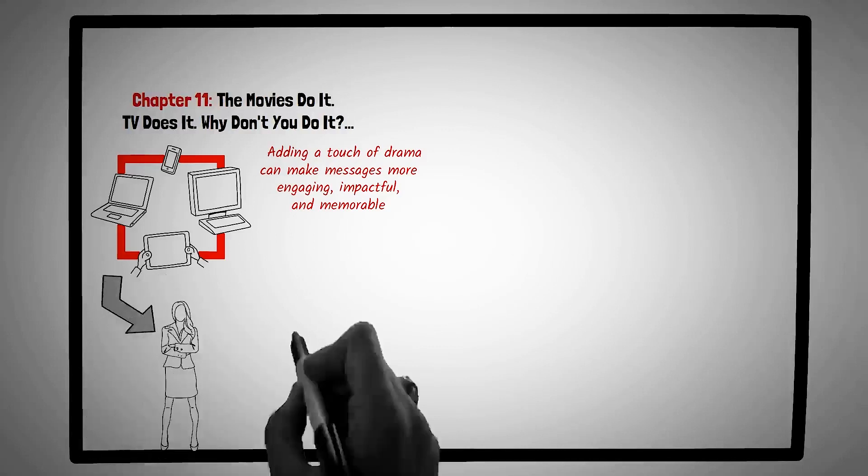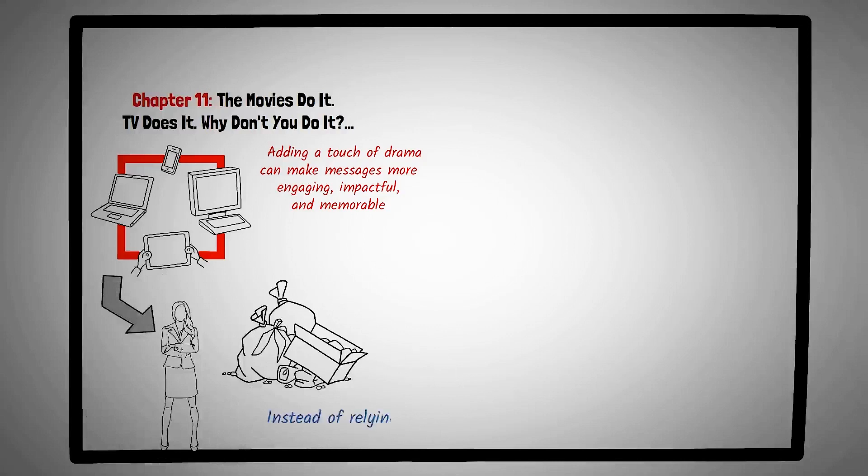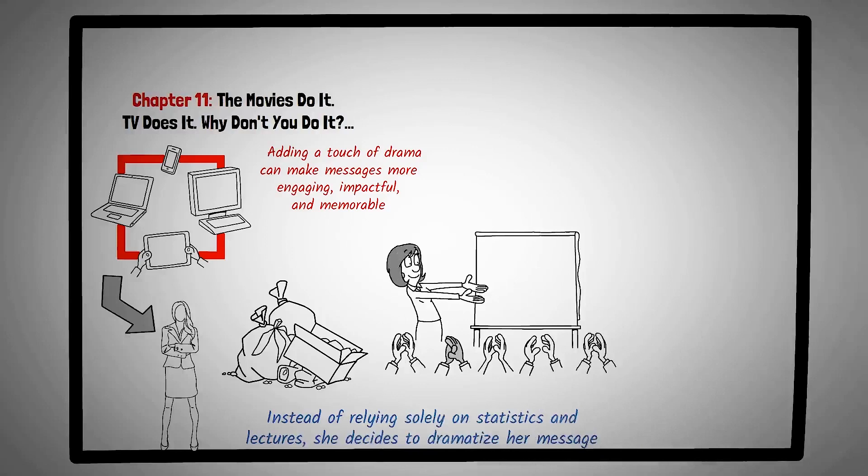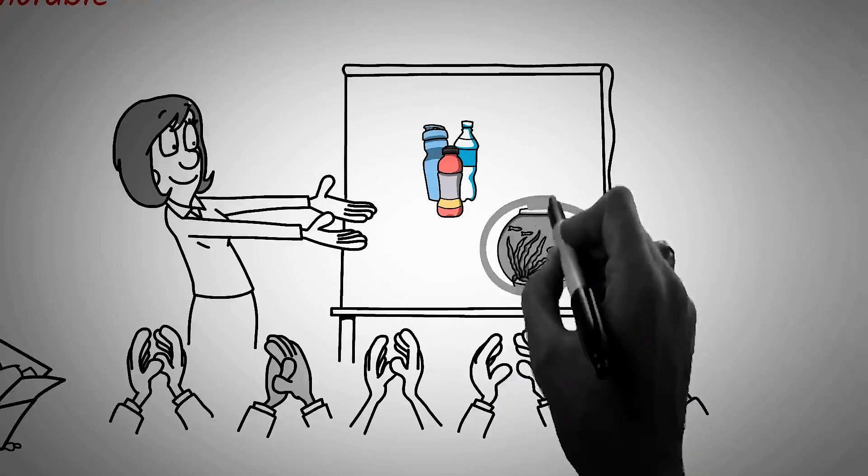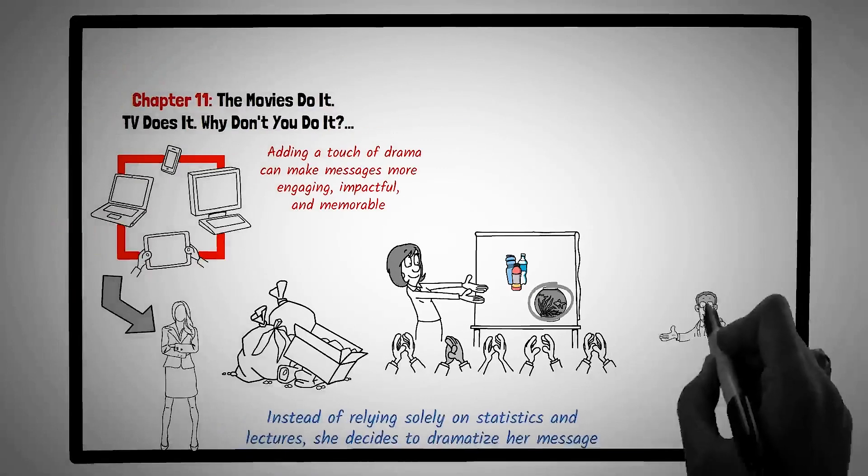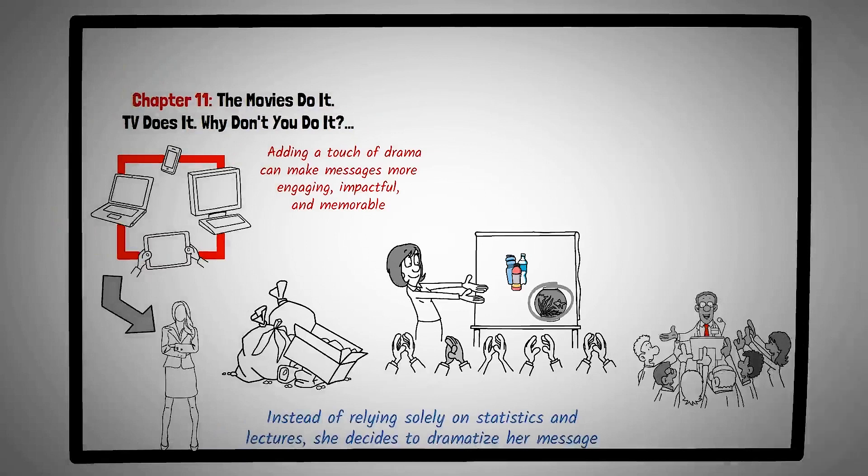Chapter eleven, the movies do it. TV does it. Why don't you do it. In an age of multimedia and constant stimulation, the art of capturing attention has evolved. This chapter emphasizes the power of dramatizing ideas, showcasing how adding a touch of drama can make messages more engaging, impactful, and memorable. Meet Clara, an environmental activist aiming to raise awareness about plastic pollution in her community. Instead of relying solely on statistics and lectures, she decides to dramatize her message. Clara organizes a public event at a local park, where she unveils a massive sculpture made entirely of discarded plastic bottles, representing a marine animal. The visual impact is immediate and profound. As onlookers gather, Clara shares the story of marine life affected by plastic waste, making her message tangible and relatable. The event garners media attention, and soon, local businesses start pledging to reduce single-use plastics. Clara's dramatic approach not only raises awareness, but also spurs community action.